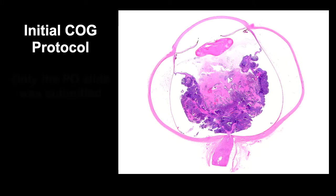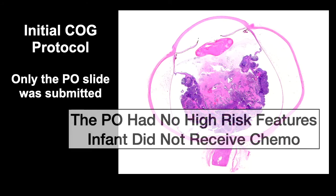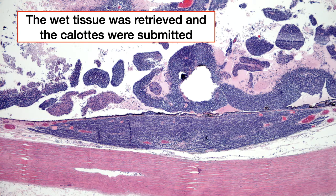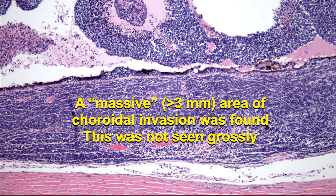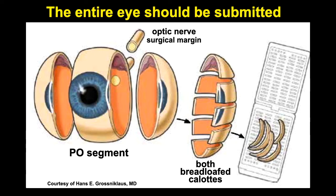A case from Wills actually changed the COG protocol and the standard protocol for dissection of eyes with retinoblastoma. In the initial COG protocol, only the PO slide was submitted, and this slide from our case showed no high-risk features. Hence, the patient did not receive chemotherapy. Unfortunately, the patient developed distant metastases several months later. We retrieved the wet tissue, submitted the clots, and found a massive area greater than three millimeters of choroidal invasion that had not been seen on gross macroscopic examination. So the COG study protocol was changed to require submission of both bread loaf clots in addition to the PO segment and a transverse section of optic nerve. The entire eye should be submitted, and you need skilled histotechnologists who know how to cut eyes and prepare high-quality sections.